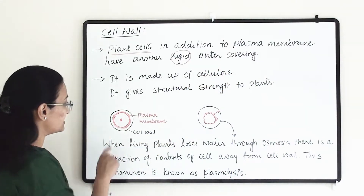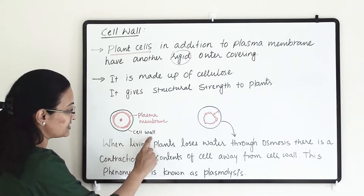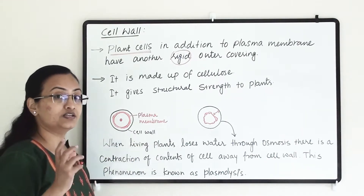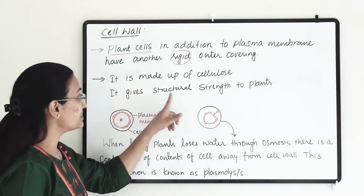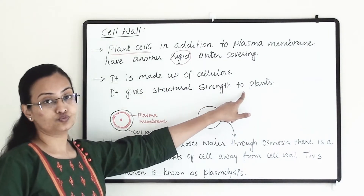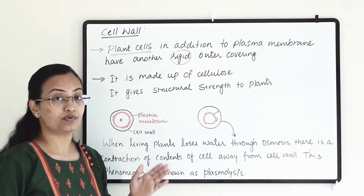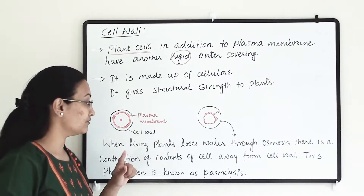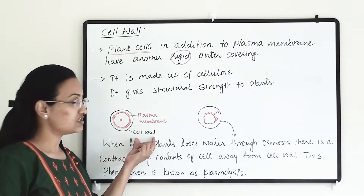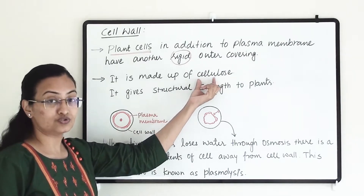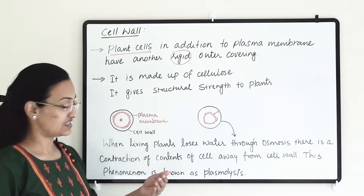Inside, the plasma membrane is present, and outside, the cell wall is there. It is rigid and strong. It is made up of cellulose and it gives structural strength to the plant. Plants need to stay upright, and this structural strength is given by the cell wall to each and every cell. So the cell wall is made up of cellulose — it is rigid and is the outer covering of the cell.